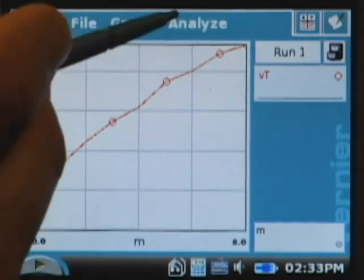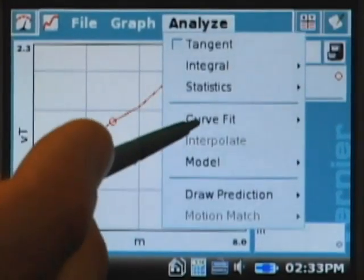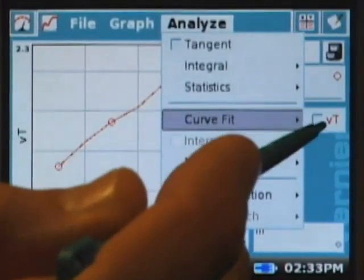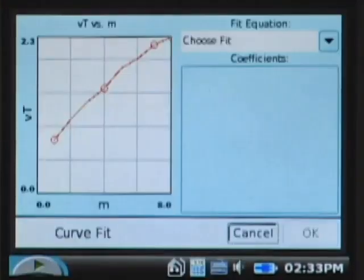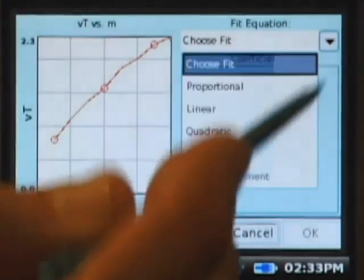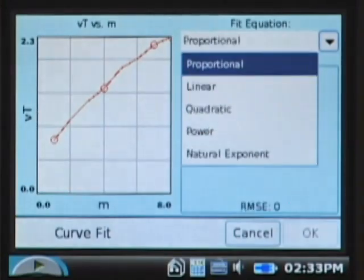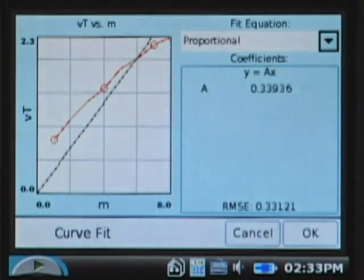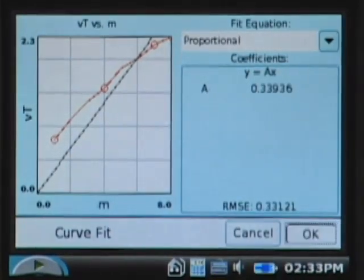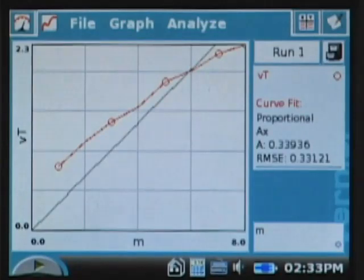So let's take this one, go to the Analyze menu, go to curve fit, and fit a line, a proportional line to terminal velocity versus mass. So I'll choose the proportional fit, not the linear fit, because those are two different things, and tap OK. And I see that my proportional model doesn't follow the terminal velocity data at all well.